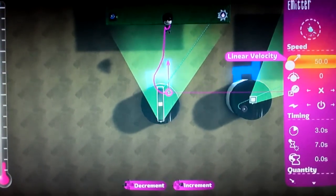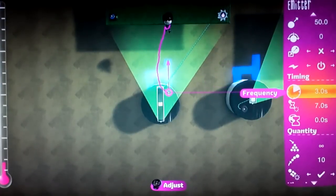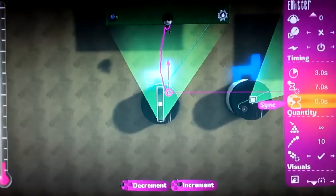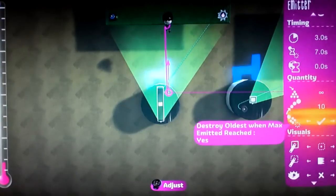So the emitter options: the linear velocity is how fast it comes out, that should be 50. Input action on, frequency is 3 seconds, and lifetime should be 7 seconds. This is like my personal things, you can change these if you want.